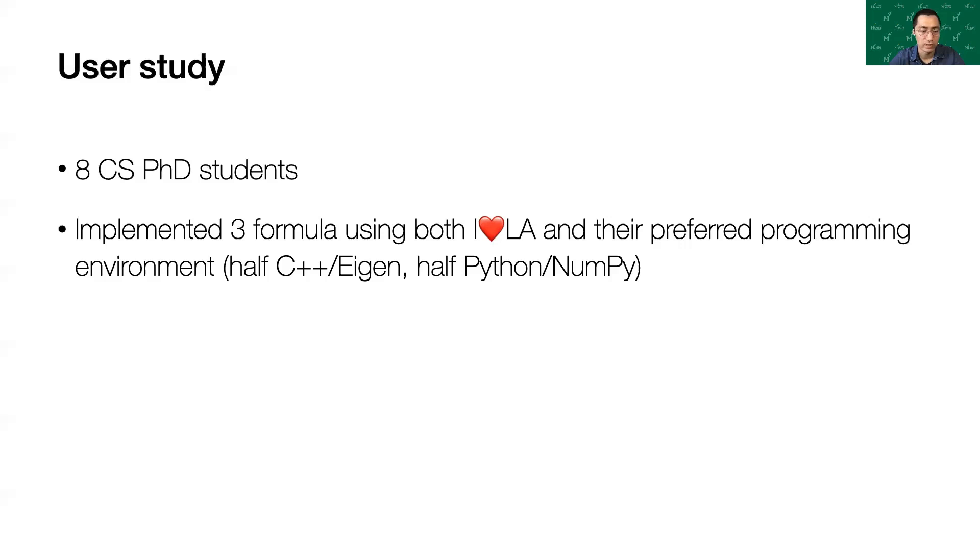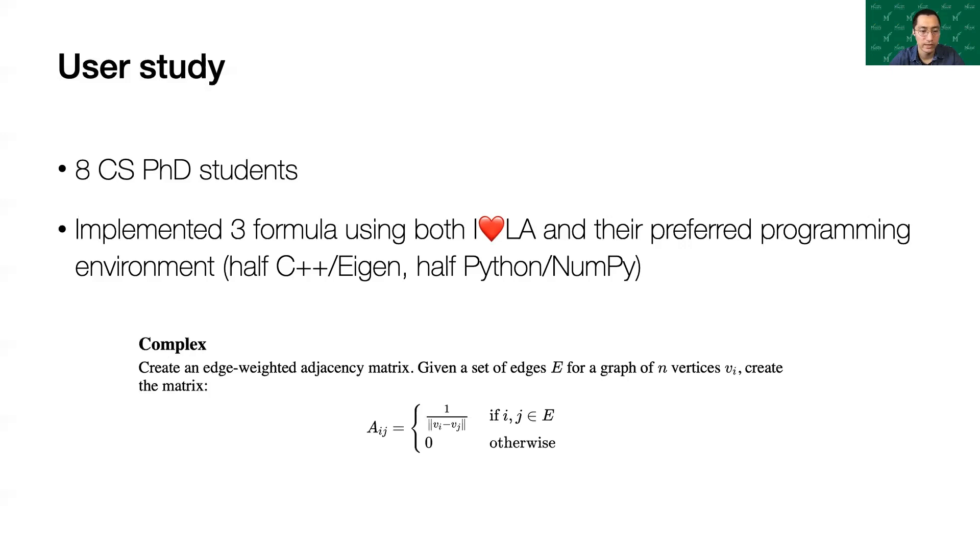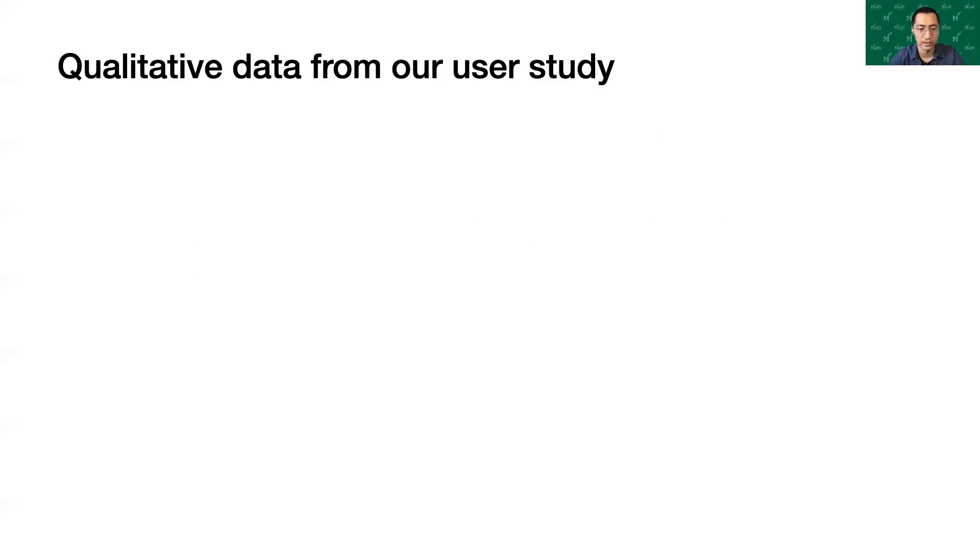For the tasks in our user study, the simple task contains matrix vector multiplication and transpose matrix. The second task is linear blend skinning, including summation. The complex task required participants to create a sparse matrix. Participants were given a test harness and skeleton code to use in their preferred programming environment.